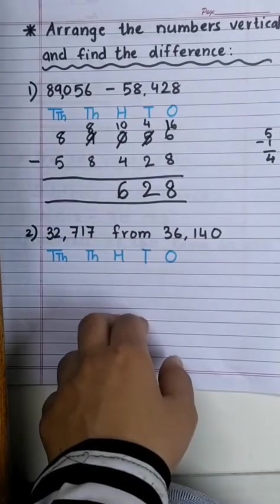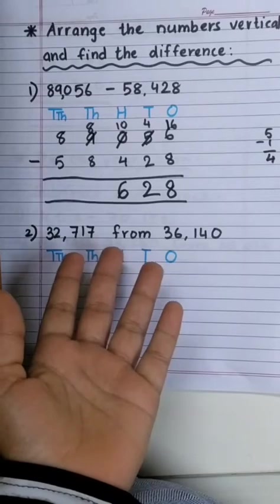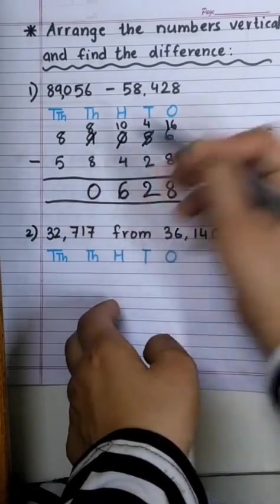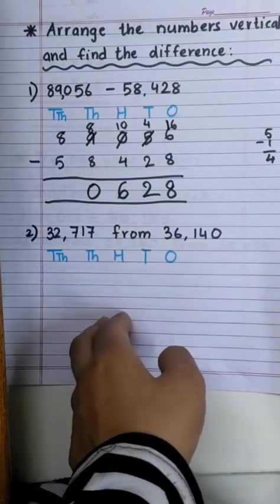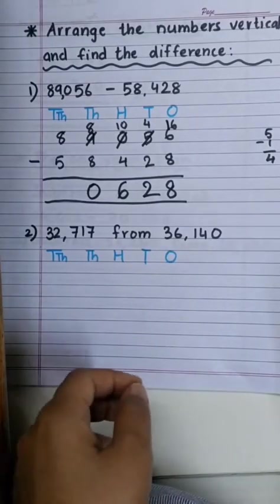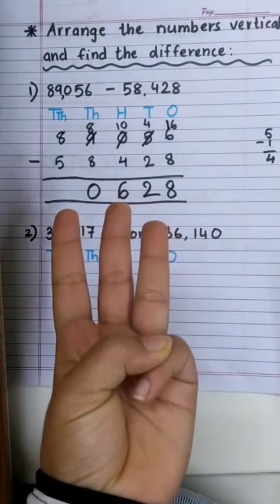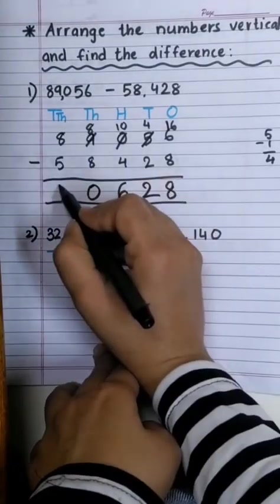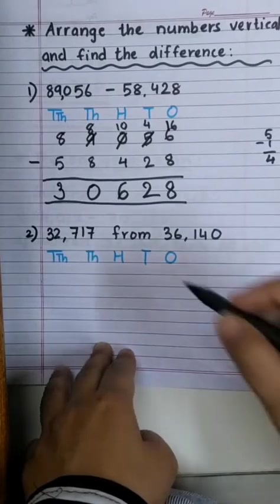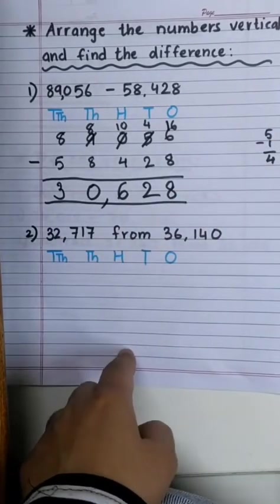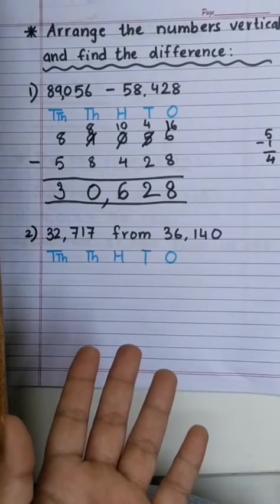Now, 8 minus 8. Any number subtracted from itself gives 0. Okay! Now, 8 minus 5. After 5: 6, 7, 8. How many remains? 3. So, the answer is 30,628. Easy! Isn't it?